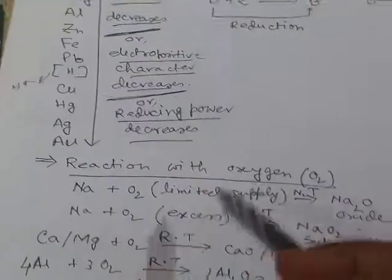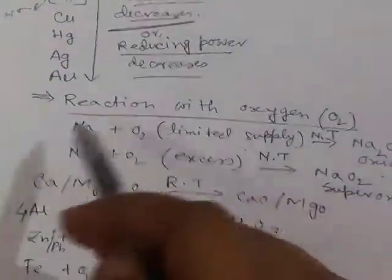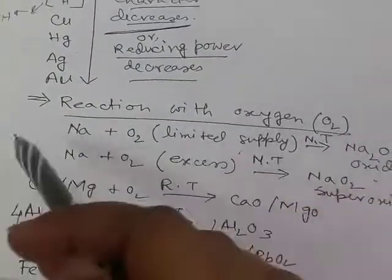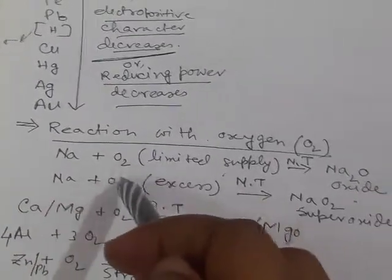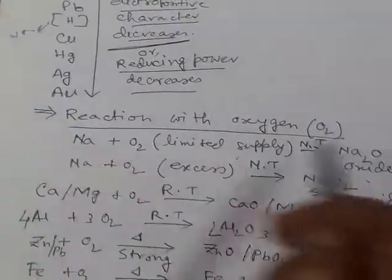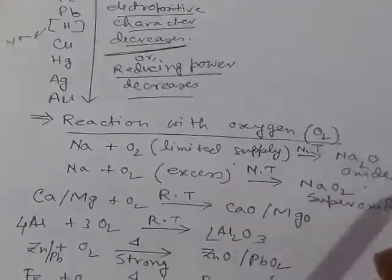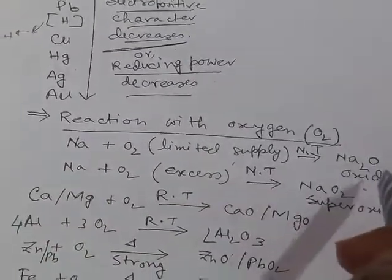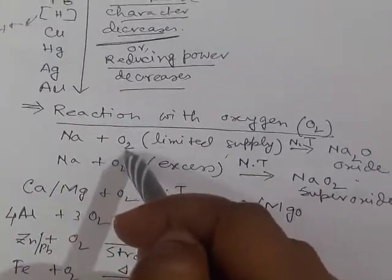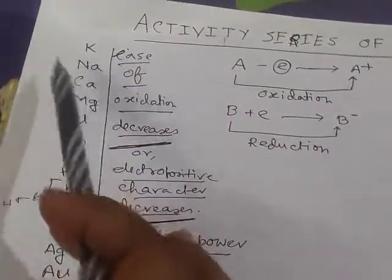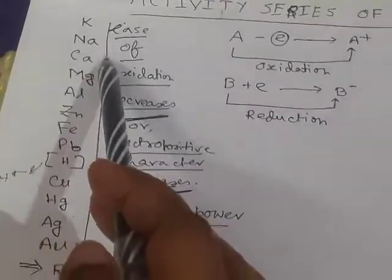Now we will see different trends of these elements in different reactions. First, reaction with oxygen: when different metals react with oxygen, there will be formation of the corresponding oxide. When a metal reacts with oxygen, the metal is oxidized. We know that metals at the top of the series are oxidized easily, so they will react with oxygen very easily.